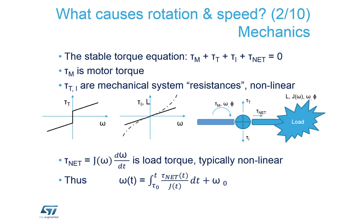Let's look at the point where the motor spins at a steady speed — it's controlled properly and neither accelerating nor decelerating. We can consider a stable torque equation with a few elements. The first is the motor torque delivered through electrical energy and the control algorithm. The other torques — T_t and T_i — are losses: mechanical losses and electrical losses. You need to cover these losses to maintain constant speed. Finally, there is the torque applied from the load.